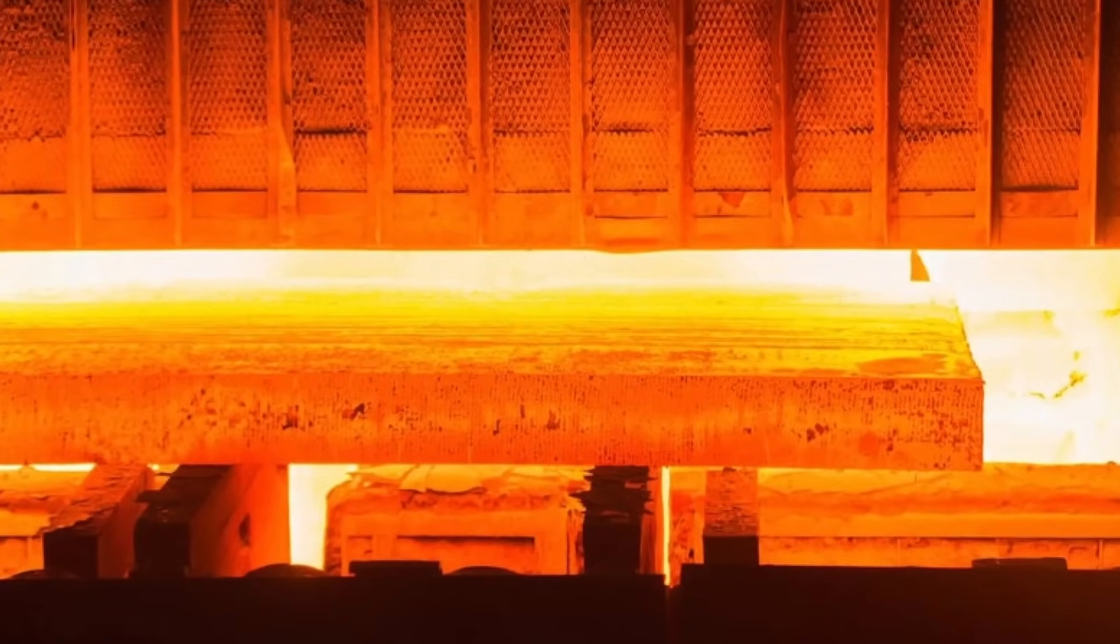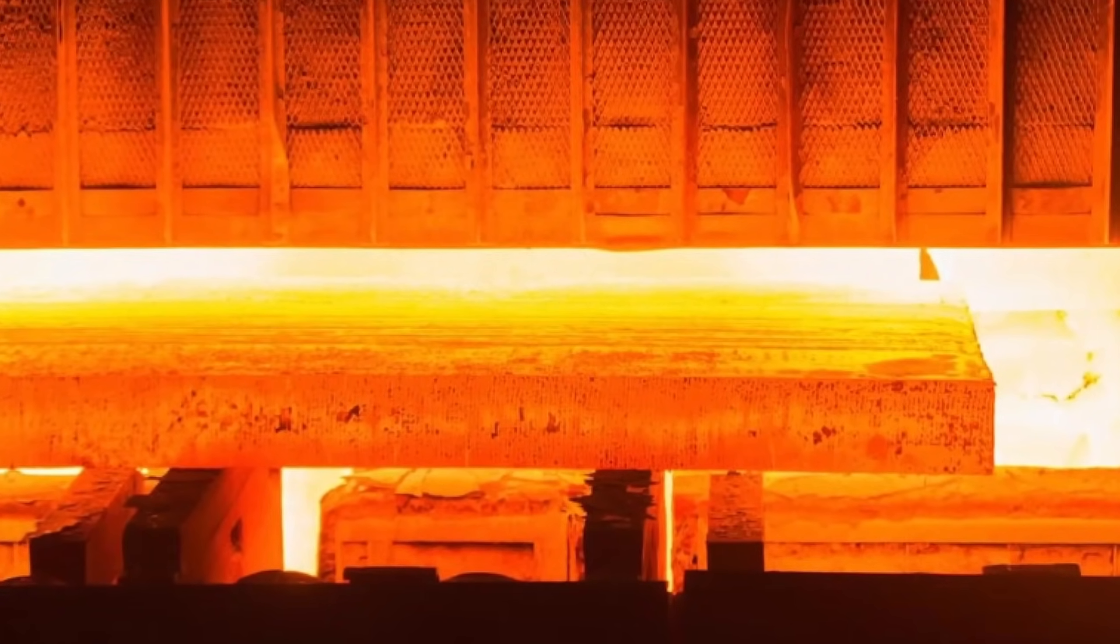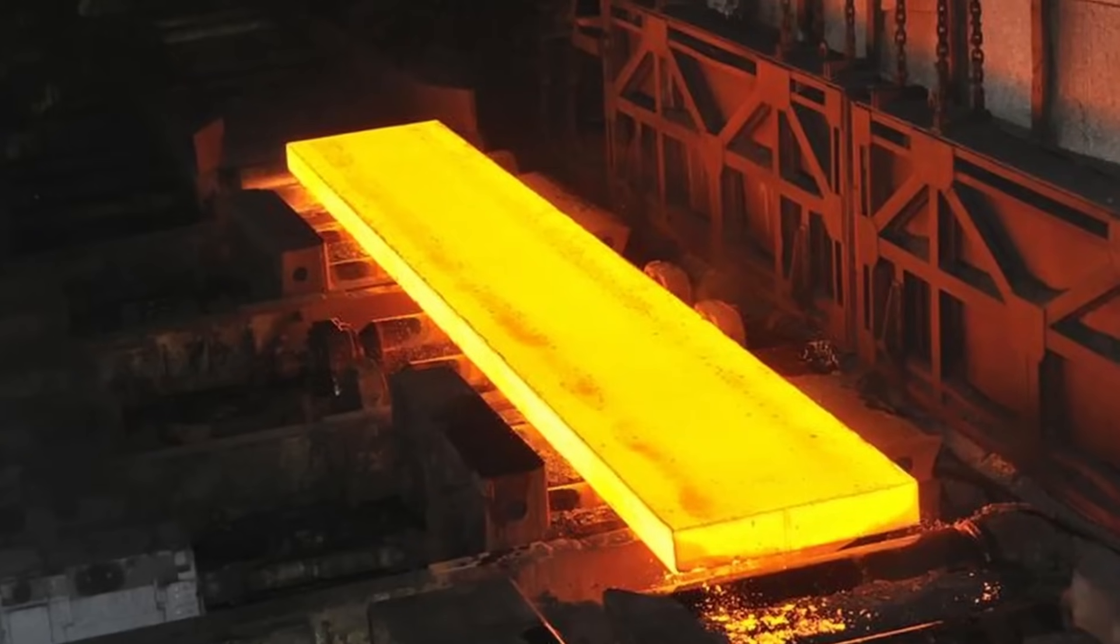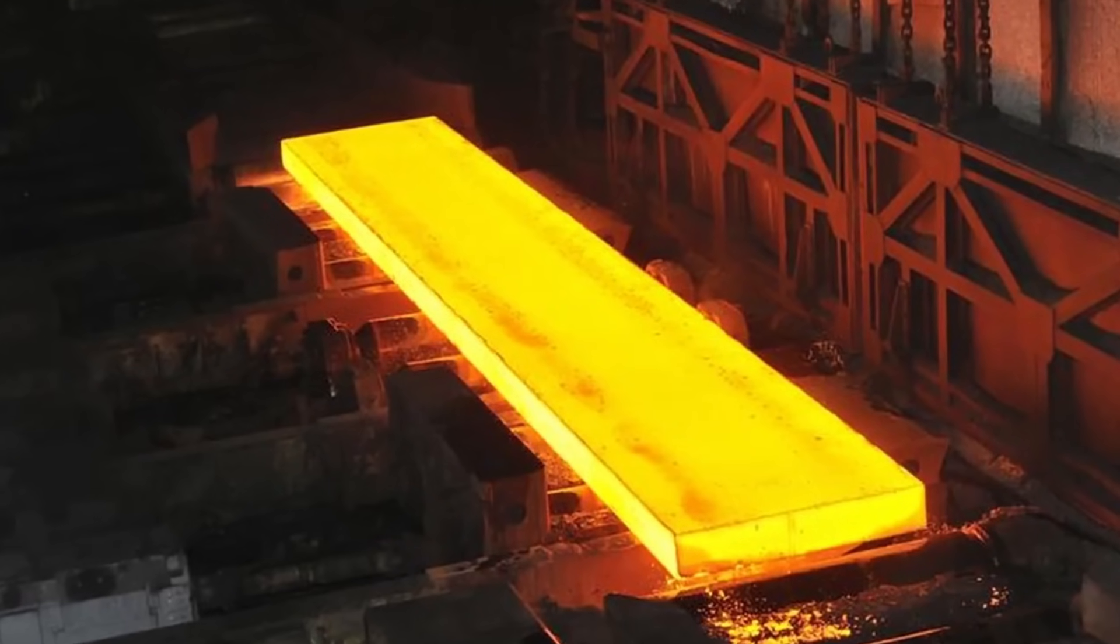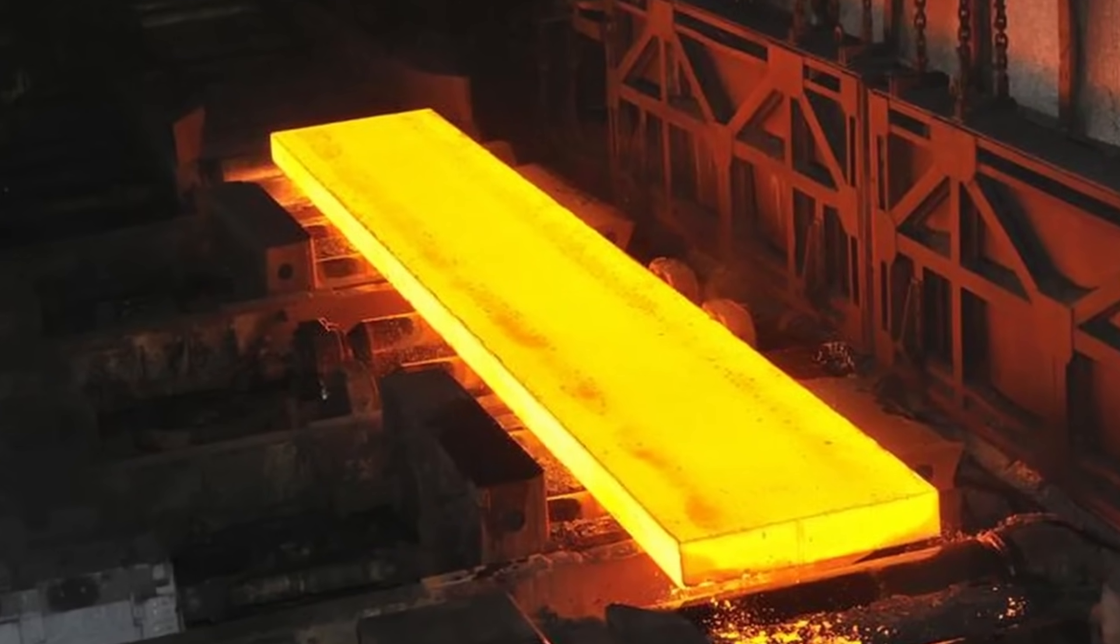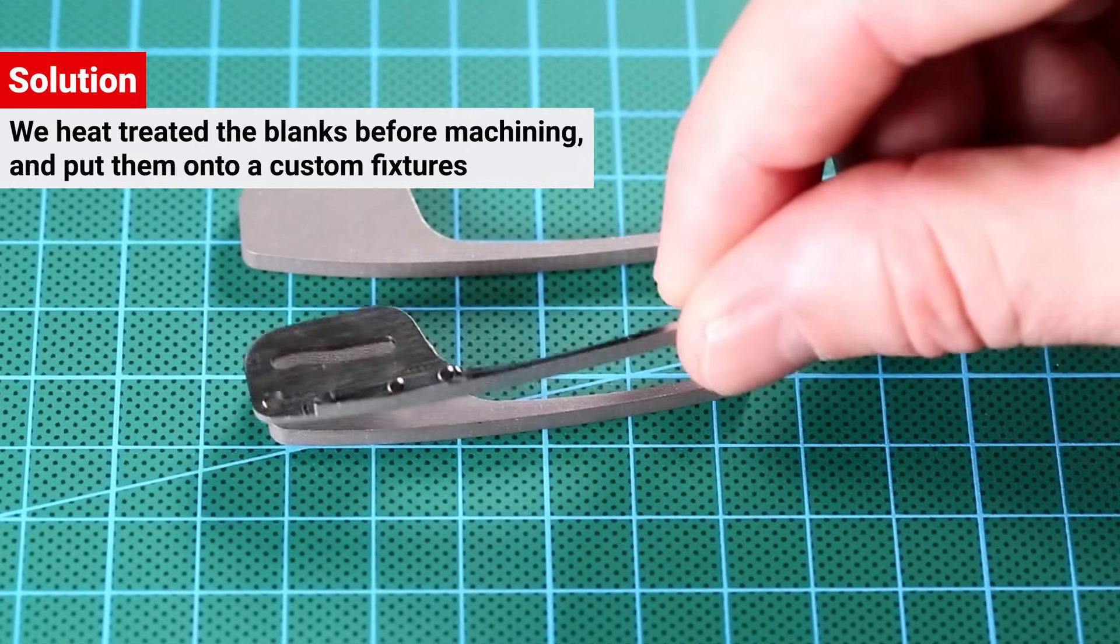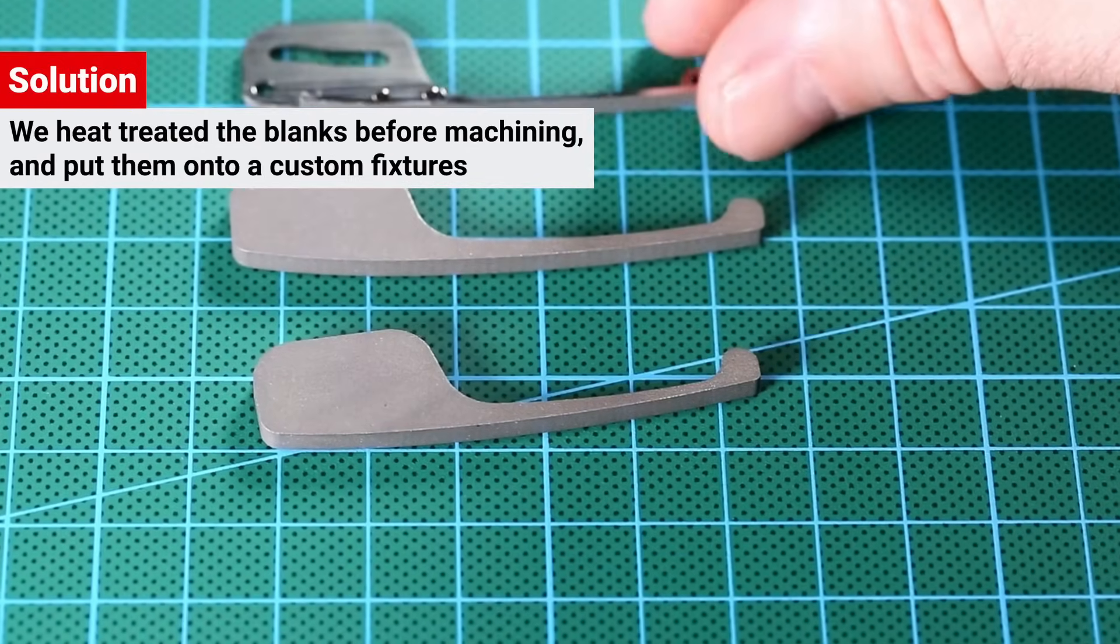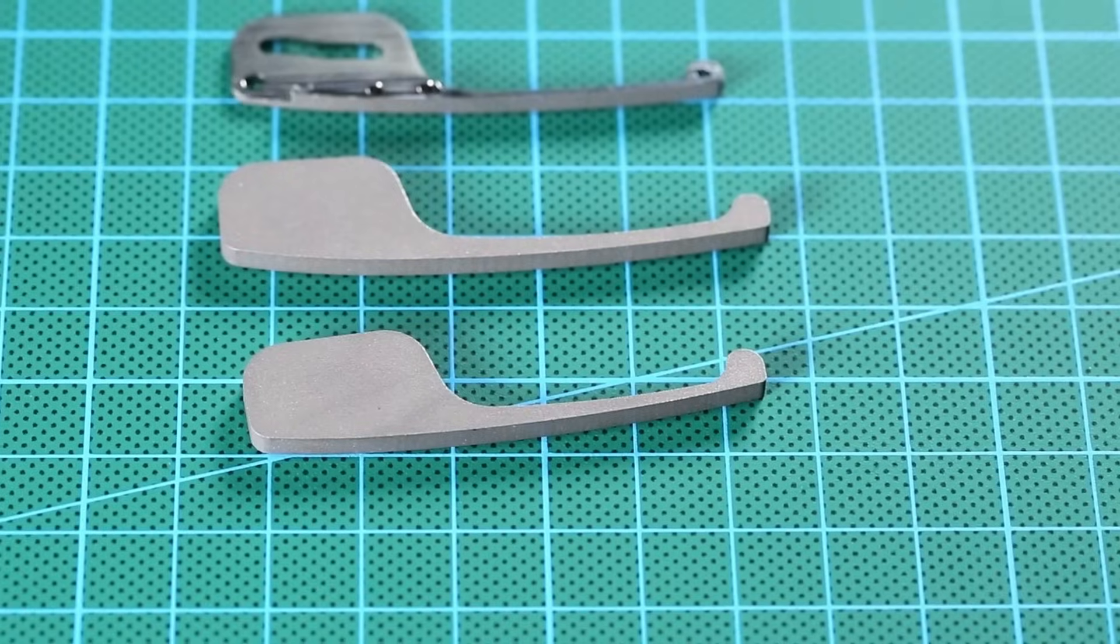Now, why can't we simply machine these parts and then heat-treat them afterwards? Because heat-treatment induces thermal stress in the metal, and that will make a finished part warp and distort after machining. Instead, we had to heat-treat them before machining. That's the reason for these rough blanks that you see here.